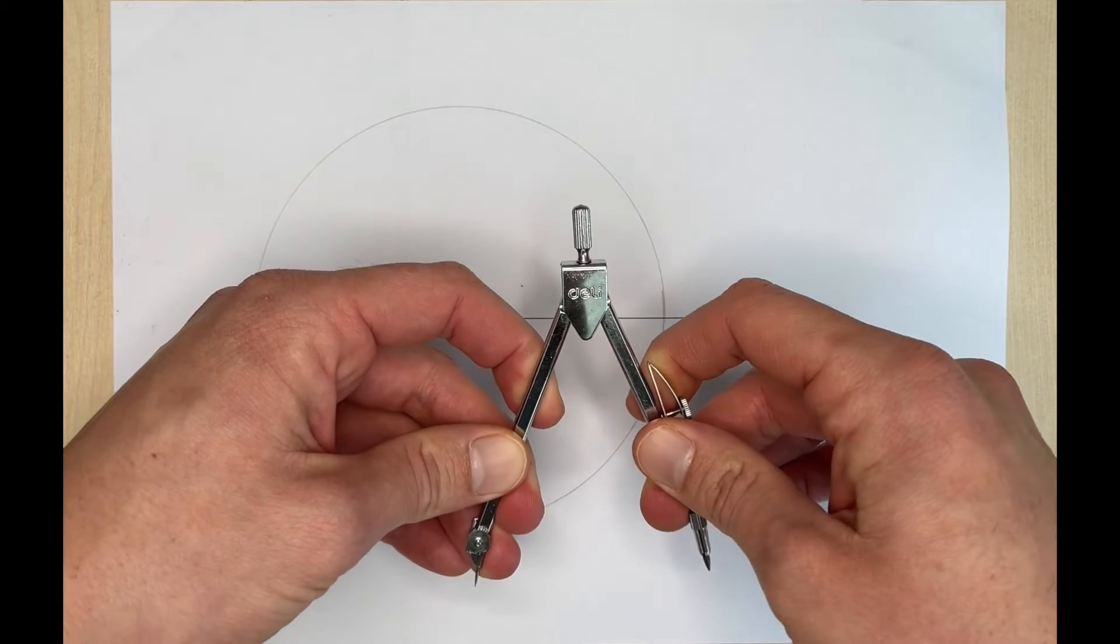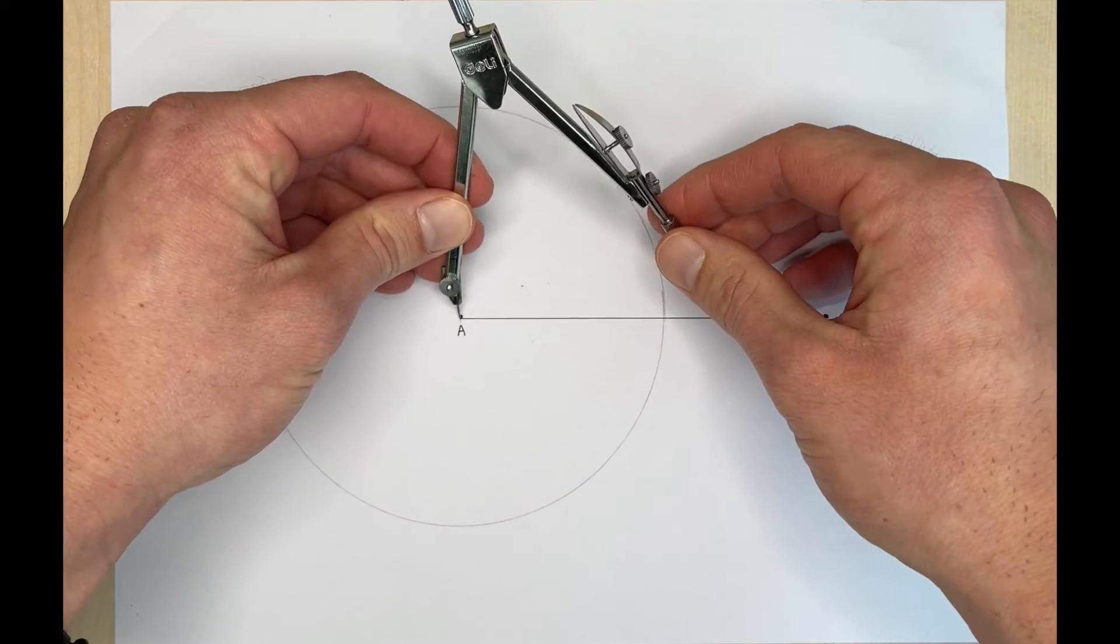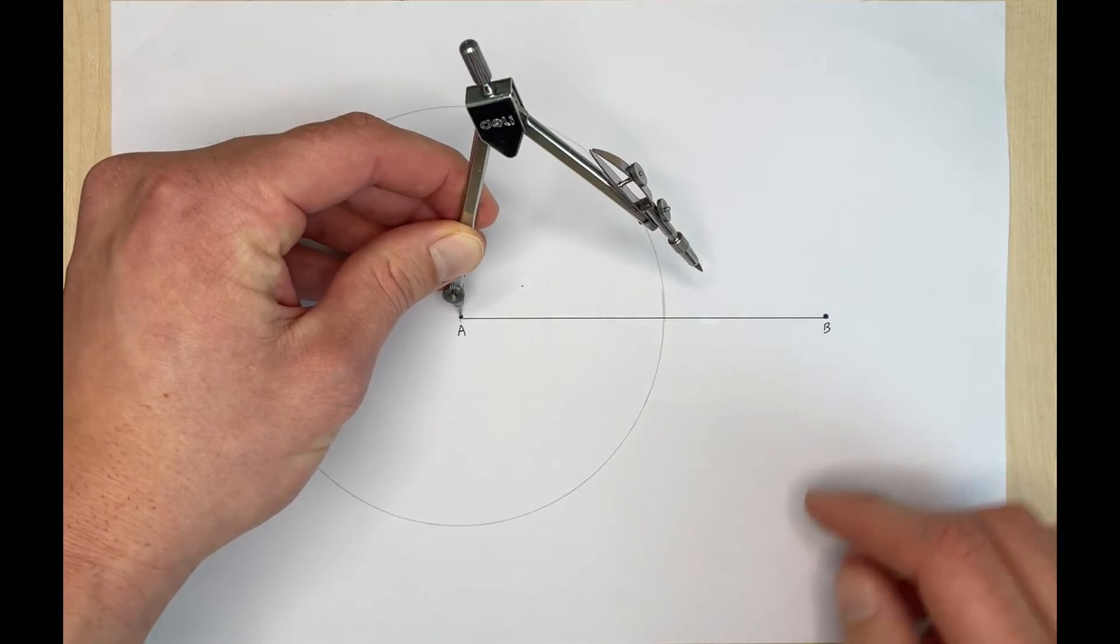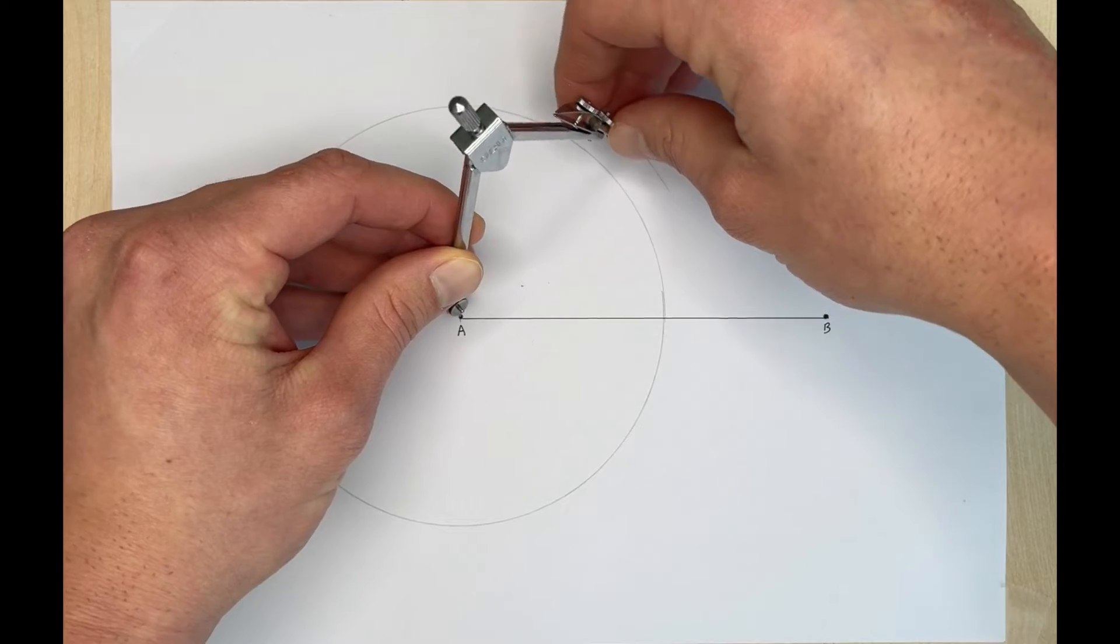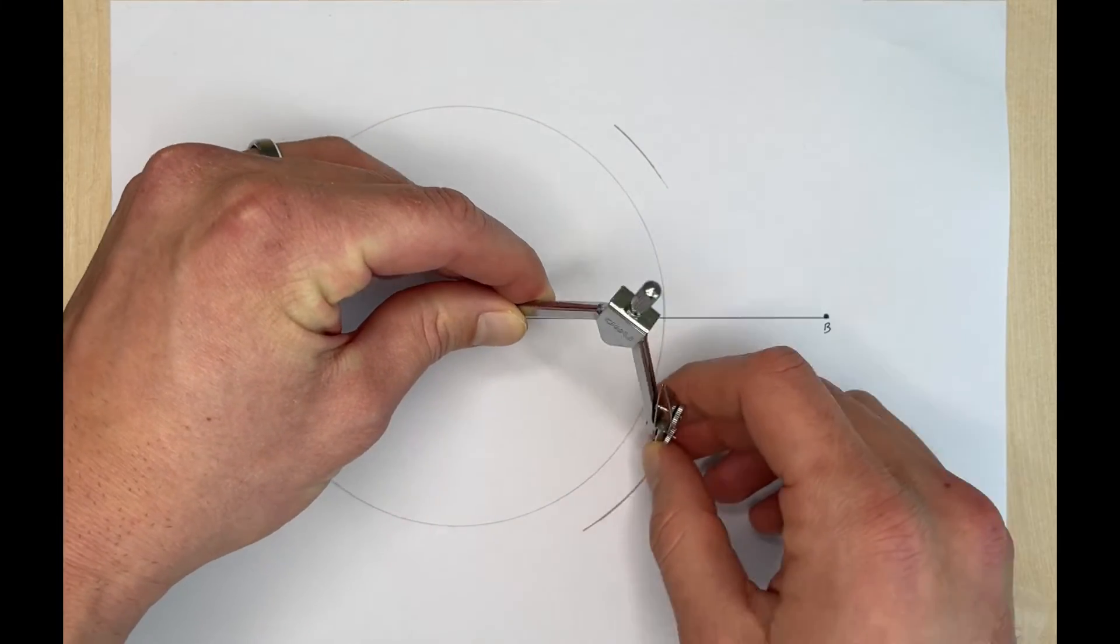So I'll open mine just a little bit wider just to be safe and we put the needle on A. We want to make an arc up here and an arc down here. So I'm going to make one arc above and one arc below.